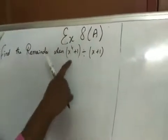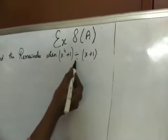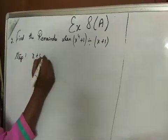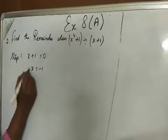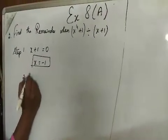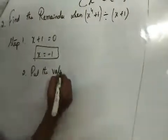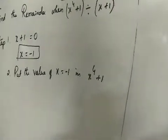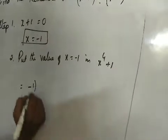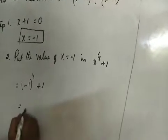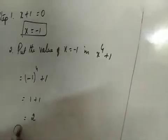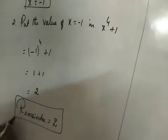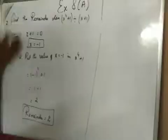Next question: find the remainder when x⁴ + 1 is divided by x + 1. Step 1: set x + 1 = 0, so x = -1. Step 2: put the value of x into the equation: (-1)⁴ + 1 = 1 + 1 = 2. So the remainder is 2. I am going to follow this method only.